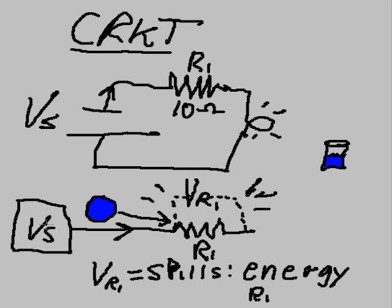The electrons, filled with energy from the voltage source, crash into the resistor and spill out a lot of energy. That is a voltage drop across resistor one — a fancy way of saying it spills a lot of its energy.